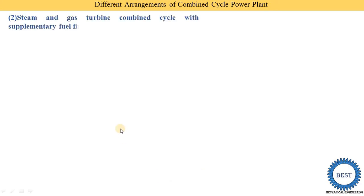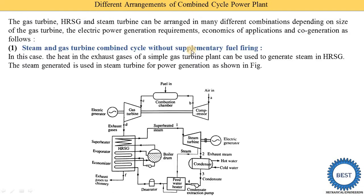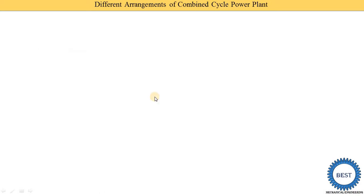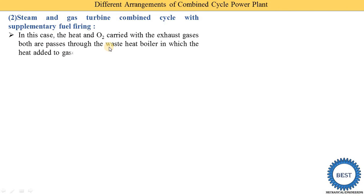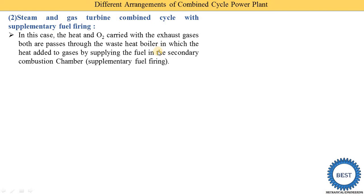The second arrangement is the steam and gas turbine combined cycle with supplementary fuel firing. In the first case, no fuel was added outside the combustion chambers. In the second case, additional supplementary firing is used. The heat carried with the exhaust gas passes through a waste heat boiler where additional heat is added by supplying fuel in a secondary combustion chamber — this is called supplementary fuel firing.